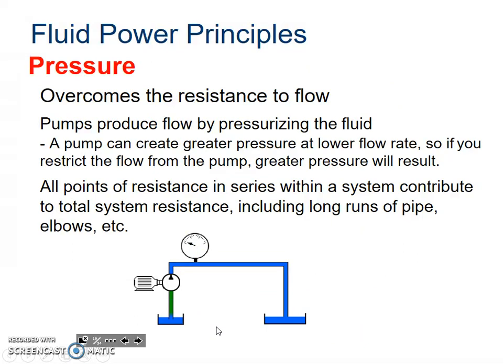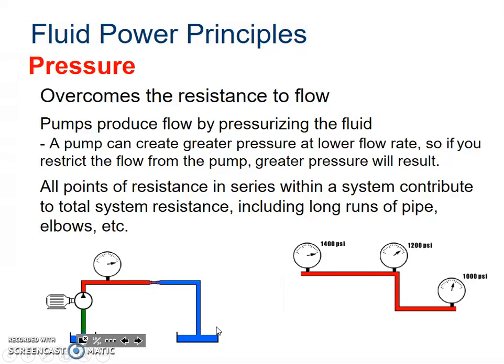Now pressure, that's going to be how hard you can hit. That's going to be how much you can push, the force you can push. All points of resistance in series within a system contribute to total system resistance, including long running pipes and elbows. So if you put a narrower pipe, that's going to increase the pressure.